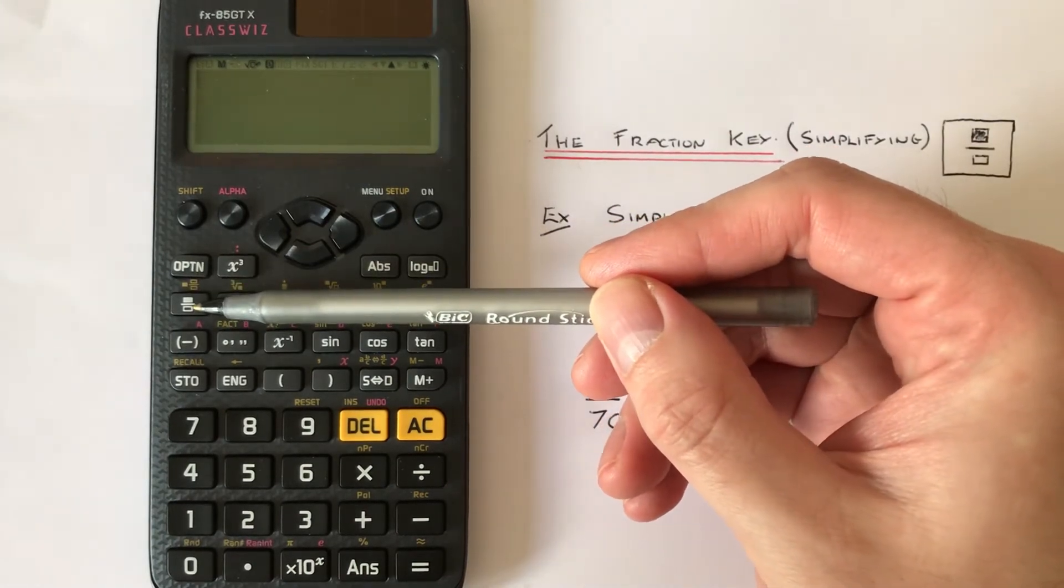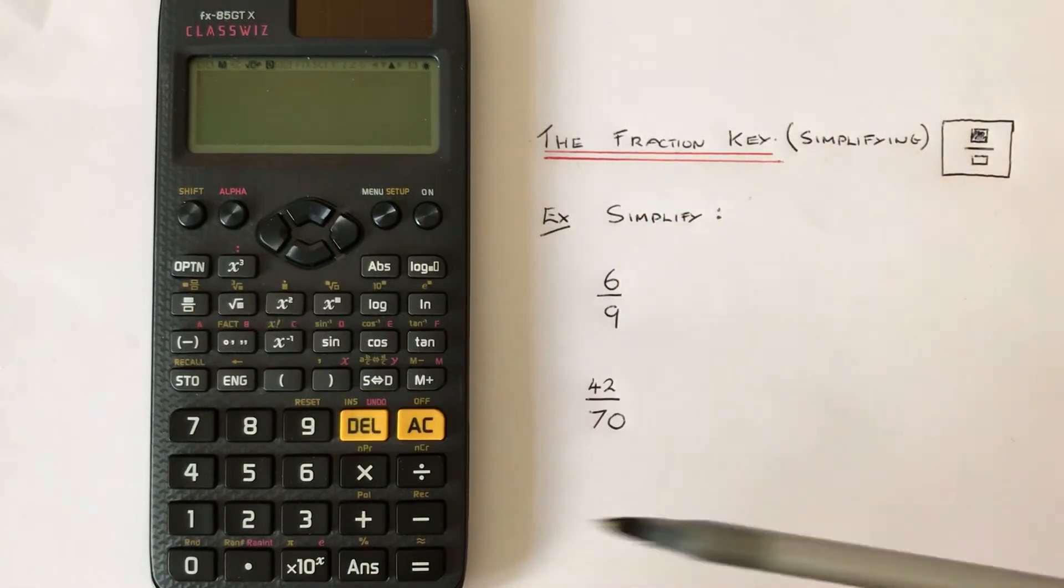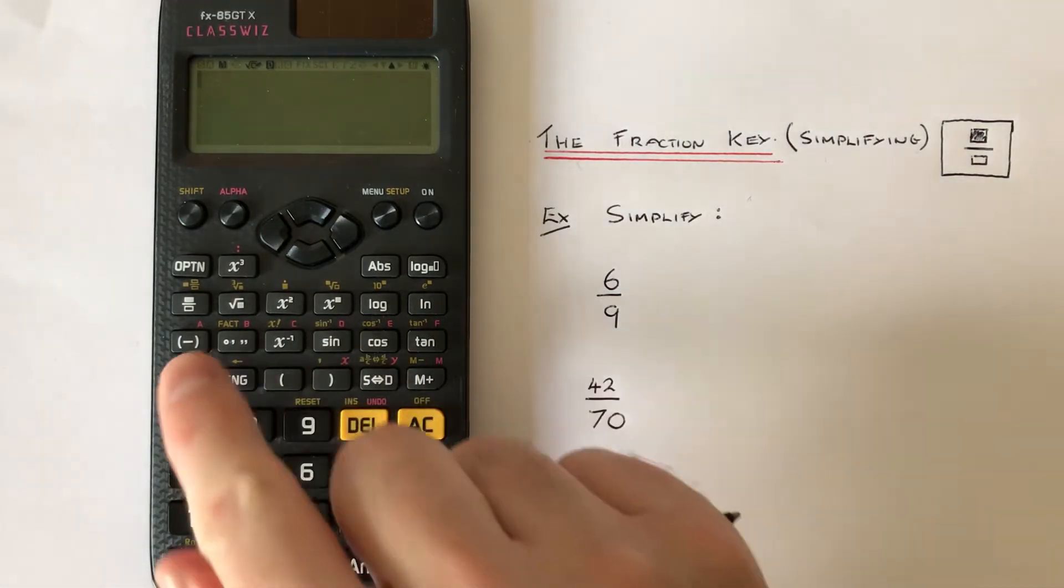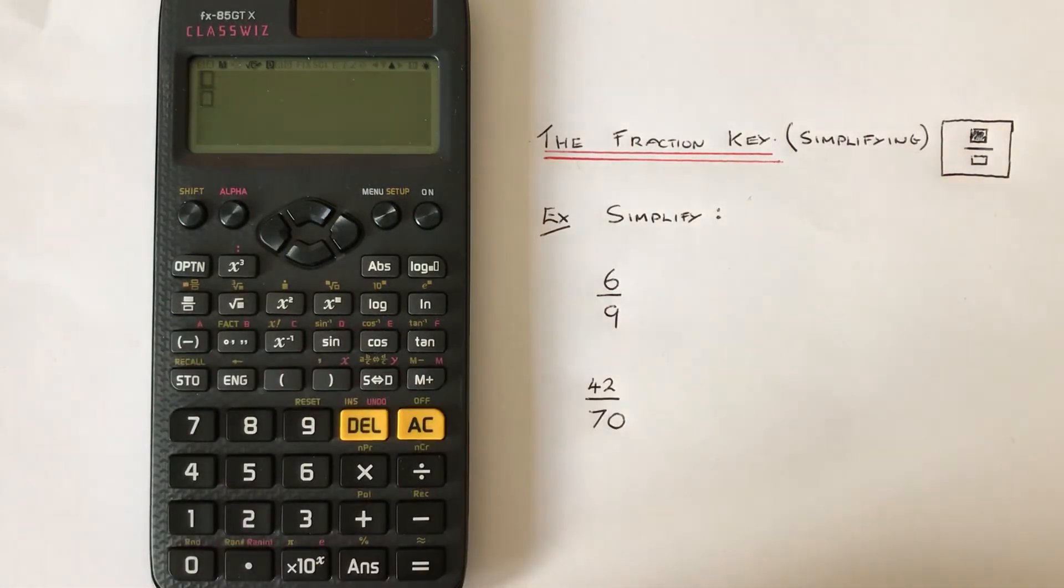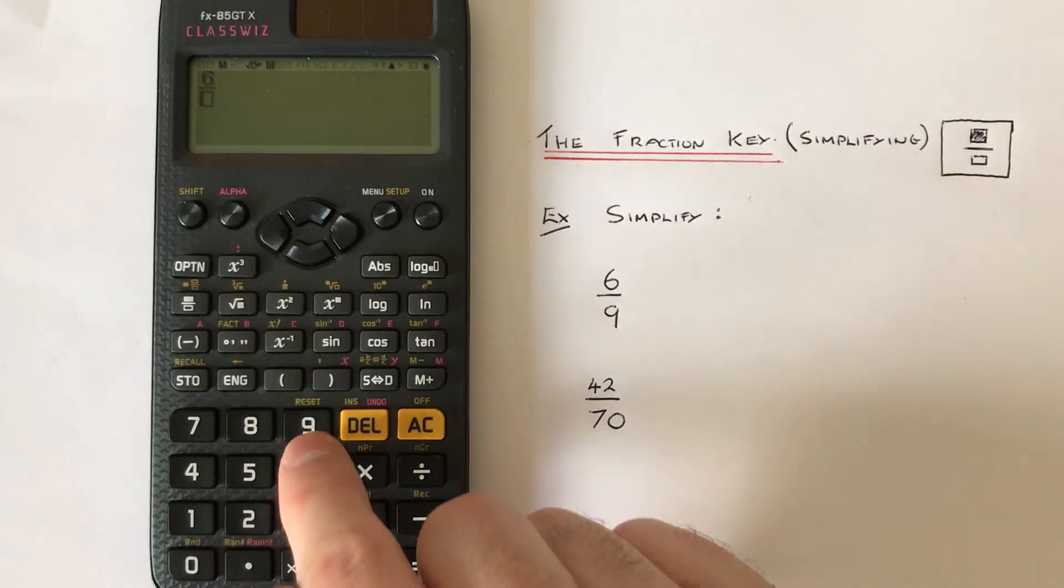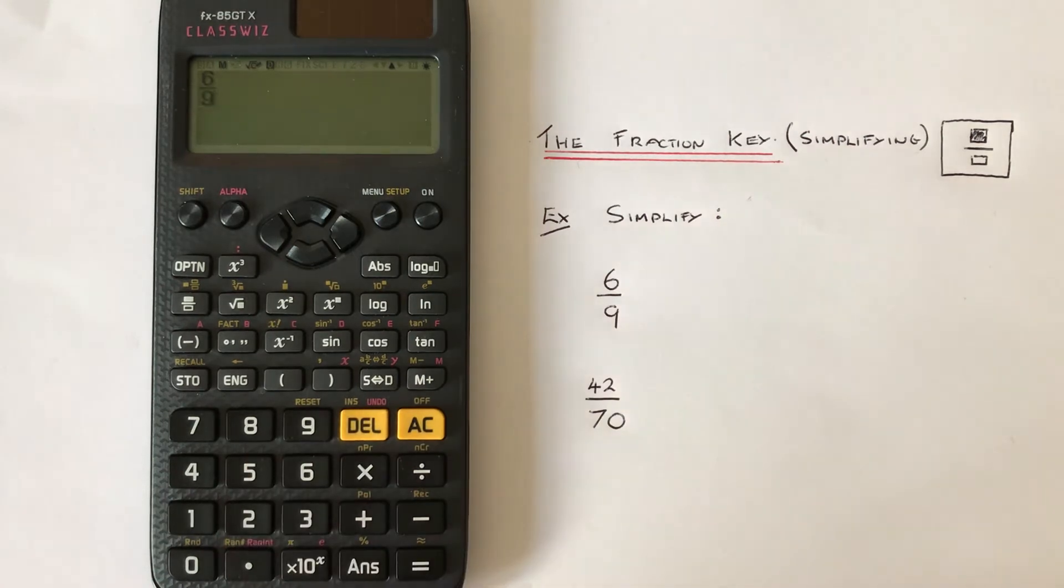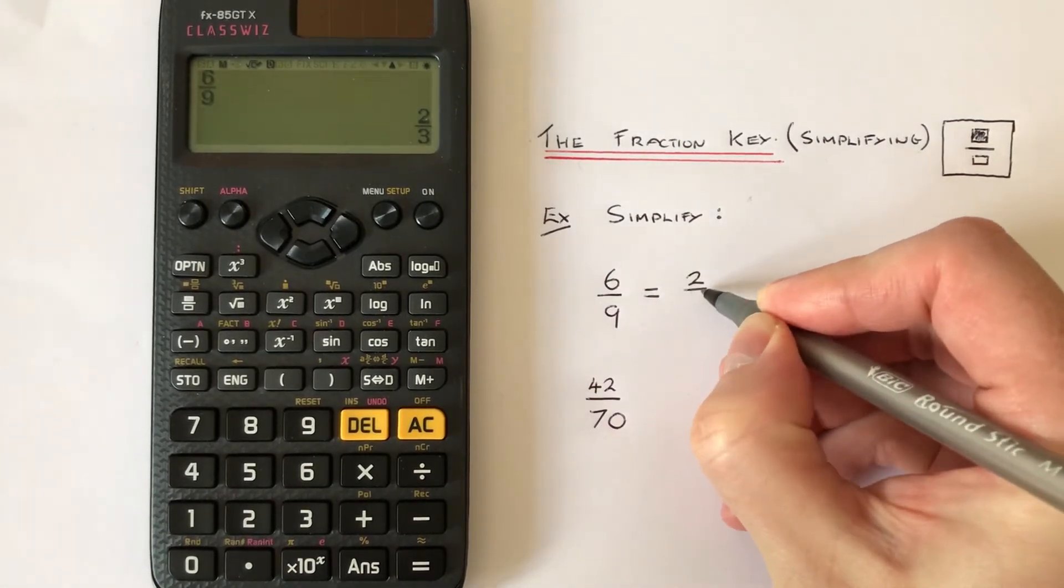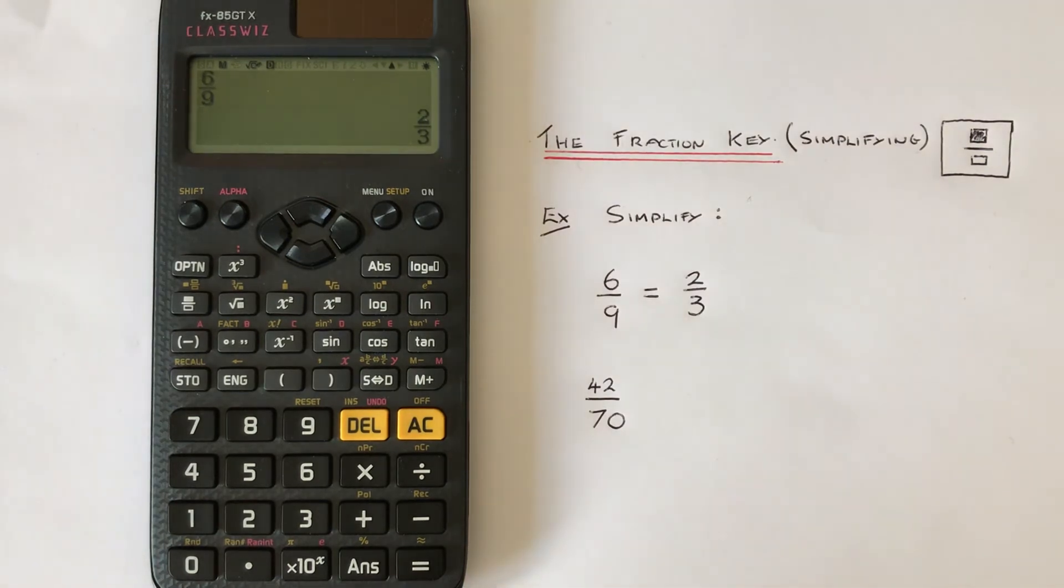Let's have a look at example one. We've got to simplify 6/9. Press the fraction key and press 6, hit the right key to go to the next box, then press 9 and then press equals. You get the answer 2/3.